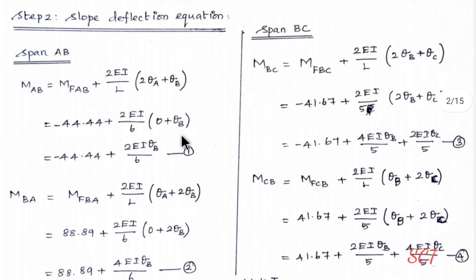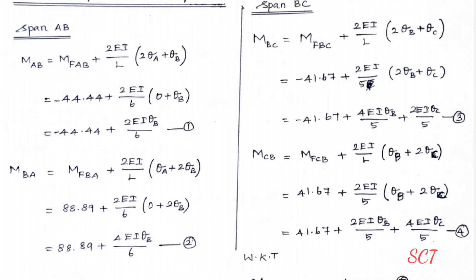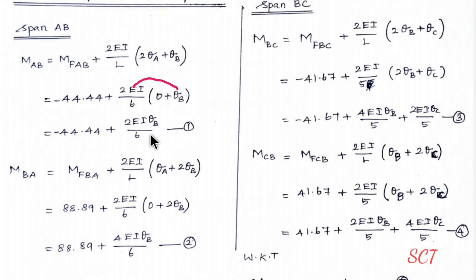Now, the slope deflection equation. The general slope deflection equation is M_AB = M_F_AB + (2EI/L)(2θ_A + θ_B). Substituting M_F_AB and noting that θ_A = 0 (fixed end), we get equation number 1.